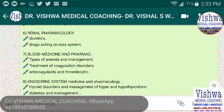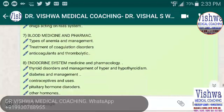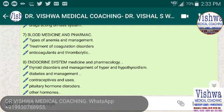In renal pharmacology, we take diuretics and drugs acting on the renin-angiotensin-aldosterone system, one of the most important drug classes. In blood medicine and pharmacology, we take types of anemia and their management — physiologically, pathologically, pharmacologically, and from a medicine point of view — as well as treatment of coagulation disorders, anticoagulants, and thrombolytic drugs.